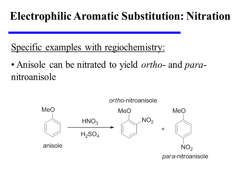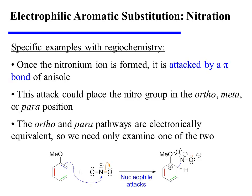Let's now turn our attention to a couple of specific examples with regiochemical considerations. For instance, anisole can be nitrated so as to yield both ortho- and para-nitroanisole. Once the nitronium ion is formed, as was shown in our generic mechanism earlier, it can be attacked by a pi bond of anisole so as to place the nitro group in the ortho-, meta-, or para-position relative to the methoxy group.